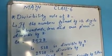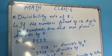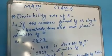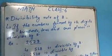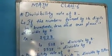So now we'll talk about the divisibility rule of 8. What is the divisibility rule of 8? If the number formed by its digits in hundreds, tens, and ones places is divisible by 8, then the number is divisible by 8.